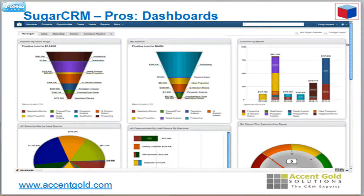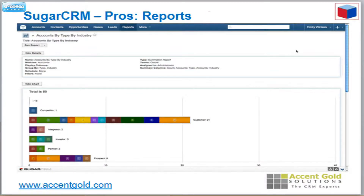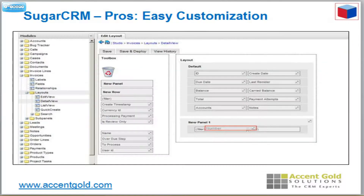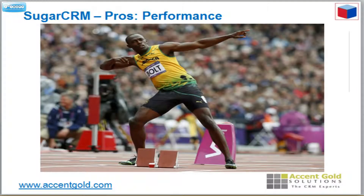I'm going to look at some of the strengths and weaknesses. We have dashboards here. I would say for end users, Sugar probably has the best dashboards on the marketplace — they're easy to configure. They also have excellent reporting, easy to configure, and once you've got a report, you can place it right onto your dashboards. They also have customization that's very easy due to drag and drop functionality throughout the system.